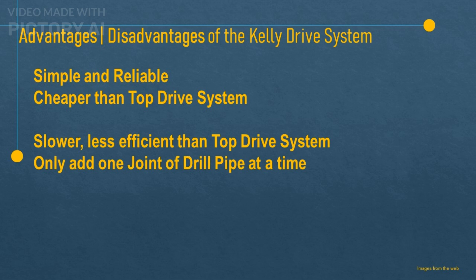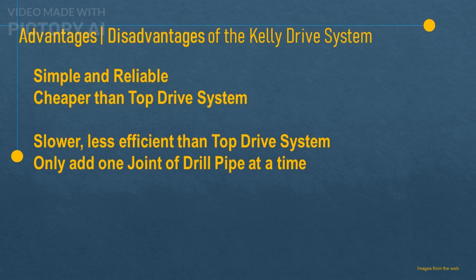This means that every 30 feet of drilling or tripping in or out of the hole requires a connection time where we have to stop rotating and add or remove pipes. This can take several minutes per connection and add up to hours or days over the course of a well. Another disadvantage is that it requires manual handling of pipes by the crew using tools such as spinning chains and tongs, which can be hazardous and cause injuries if not used properly.